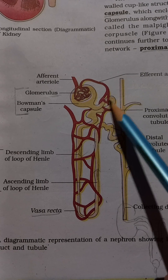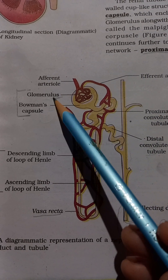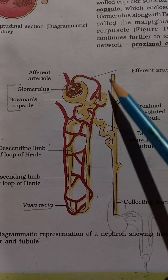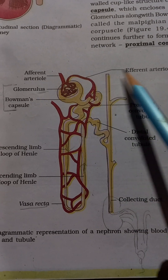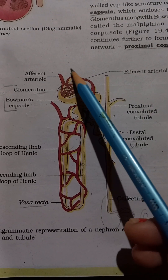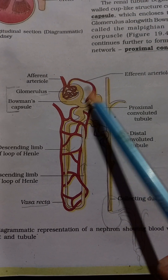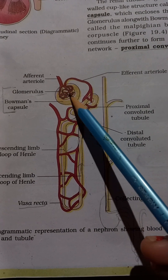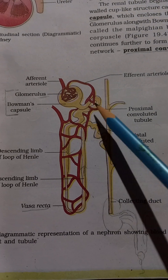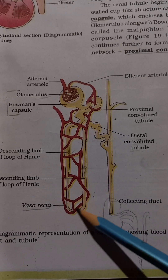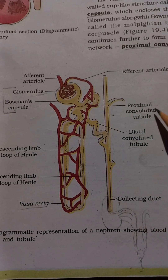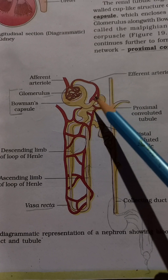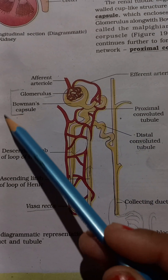The Malpighian tubule includes several parts. Blood is brought to the glomerulus through the afferent arteriole and leaves through the efferent arteriole. The afferent arteriole sends blood to the kidney for filtration at the hilum, and the efferent arteriole carries blood away. This is the vascular component related to the glomerulus.